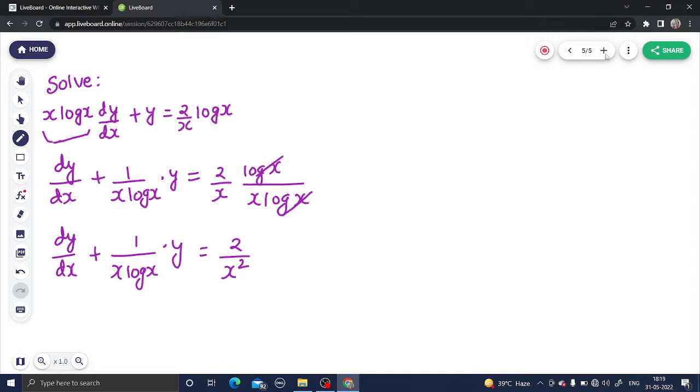This is clearly of the form dy/dx plus function of x, which we call as p, into y equals a function of x, which we call as q. So our integrating factor in this type of problem is e power integral p dx. So p is 1 upon x log x dx.